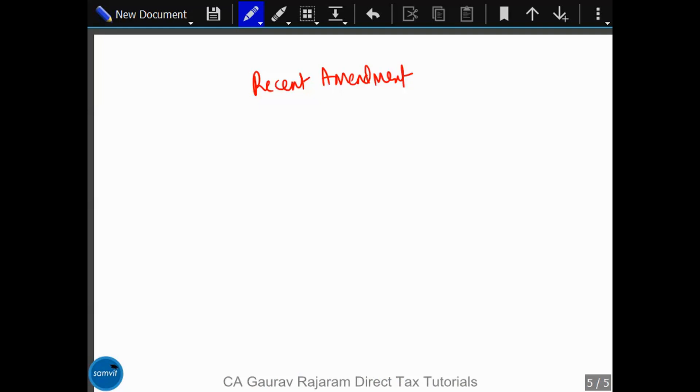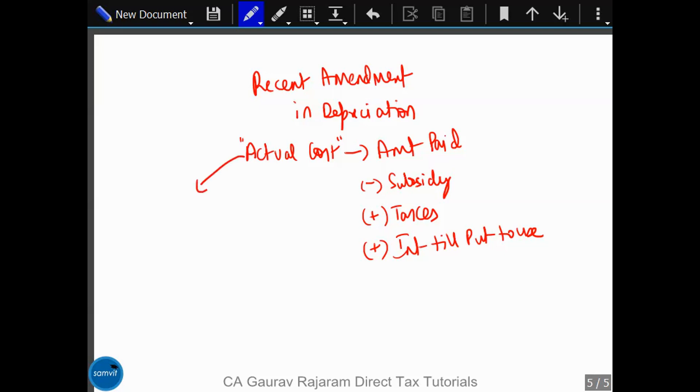So there was a recent amendment in depreciation provisions, not in section 32, in explanation to section 43. So one of the definitions is the definition of actual cost. The definition of actual cost has been modified. Actual cost means the amount paid minus any subsidy plus any taxes plus any interest till it is put to use as per the relevant ICDS read with 36(1)(iii). So if you add all of this and subtract the subsidy you will get your actual cost. And what is the significance of actual cost? This is the one which is added to the block. So if there is actual cost your block goes up, block goes up you get depreciation.